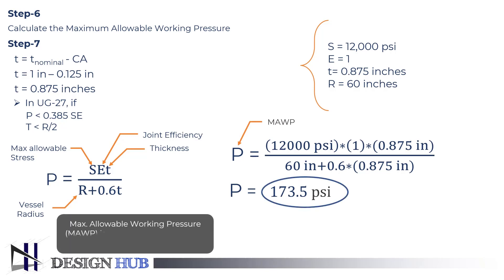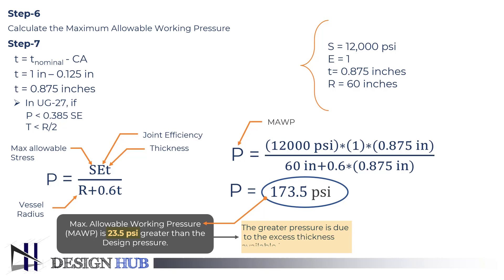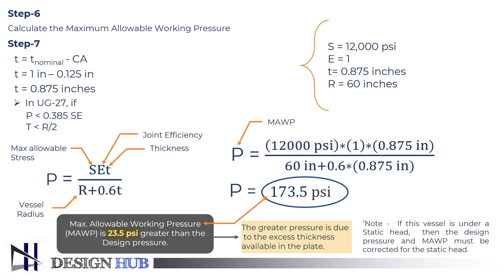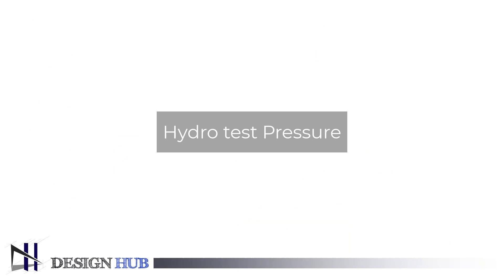This is 23.5 pounds per square inch greater than the design pressure. We are getting a greater pressure due to the excess thickness of the plate. There is one thing to note: a vessel under a static head leads to a change in design and maximum allowable working pressure. That is all about maximum allowable working pressure. We will discuss hydro test pressure in the next video.